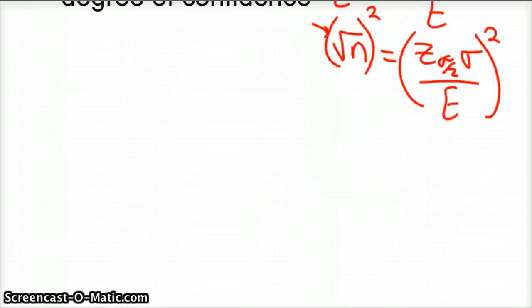So our final formula for finding out sample size is your sample size is always equal to your z-score alpha over 2 sigma over E squared. Now, this alpha over 2 part, you're not really doing any mathematics with that.